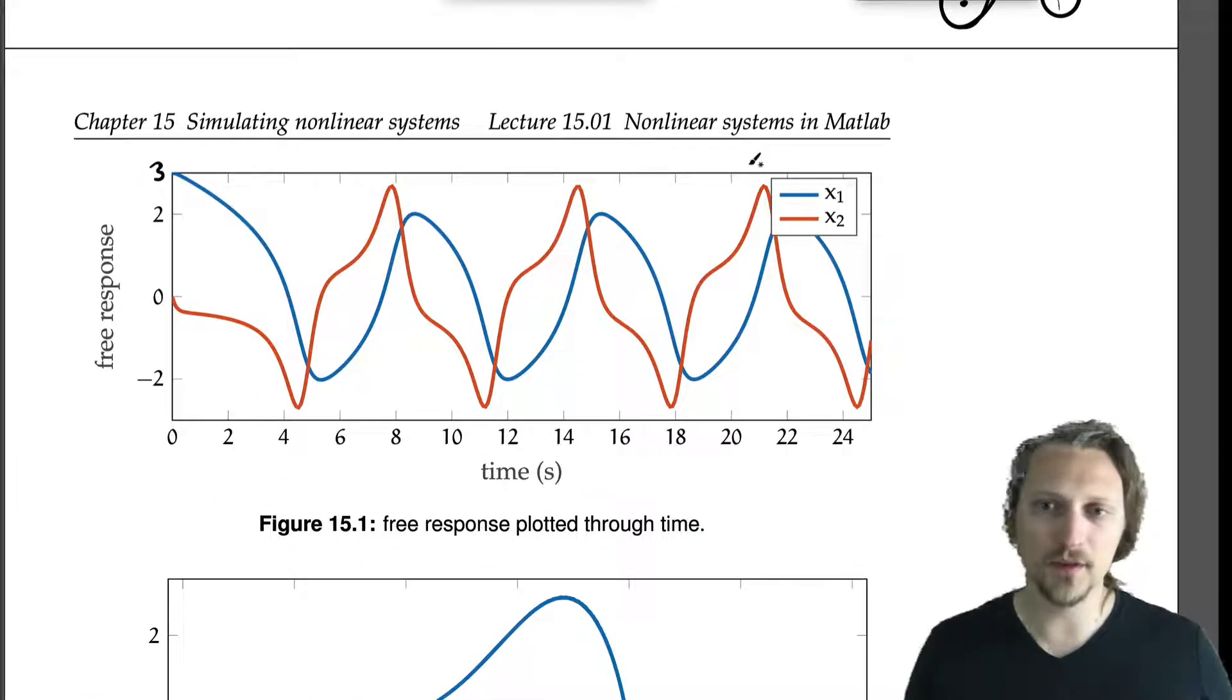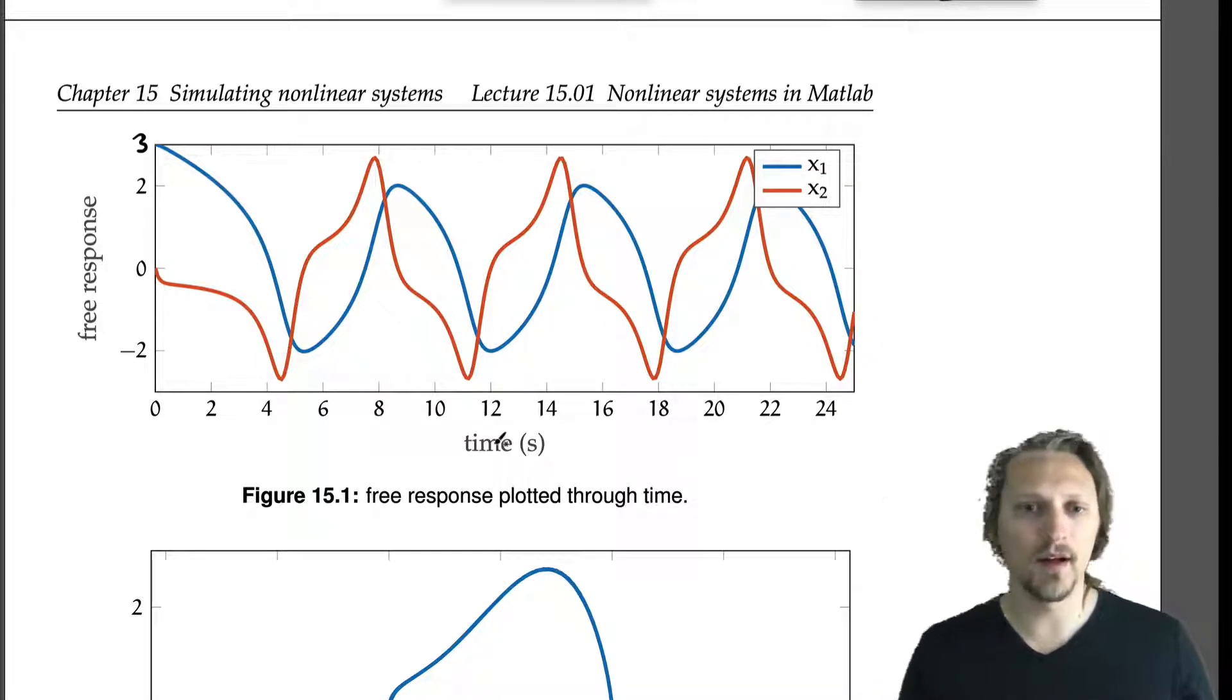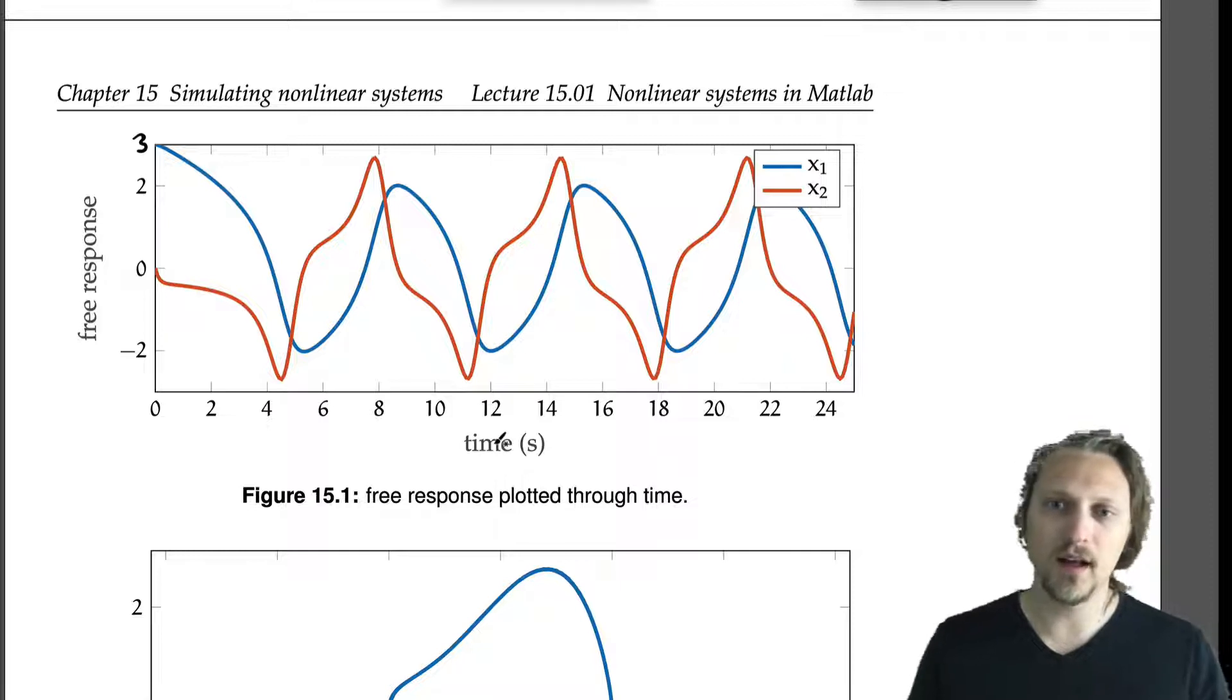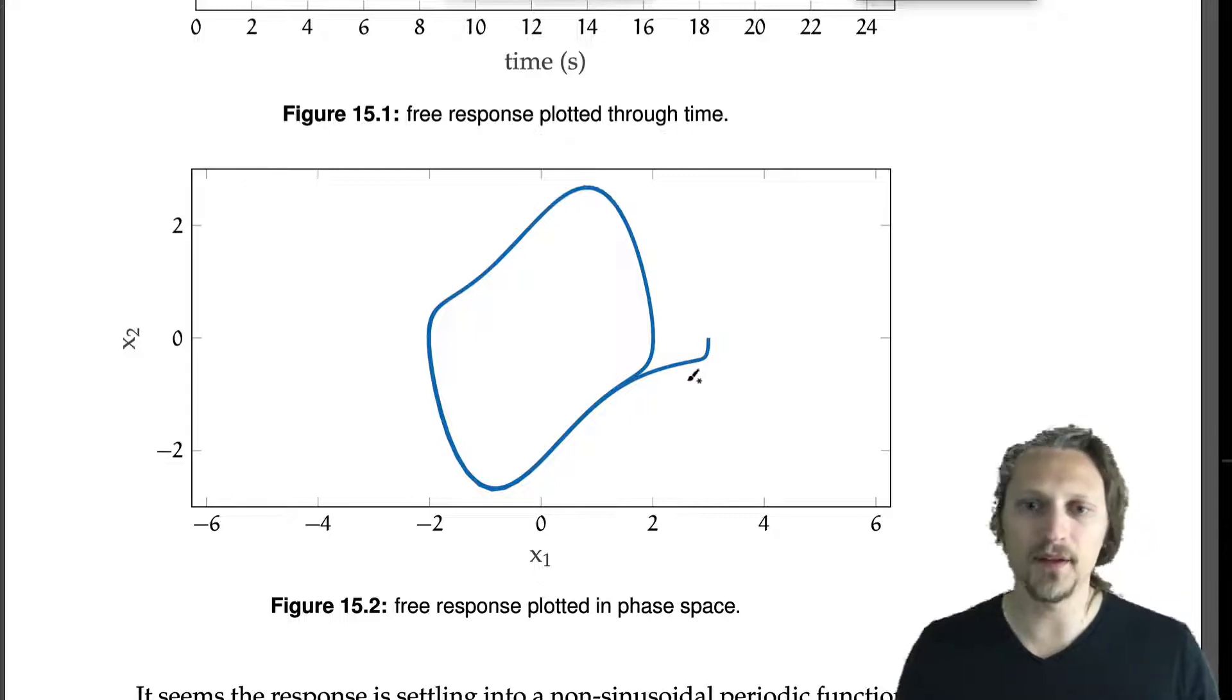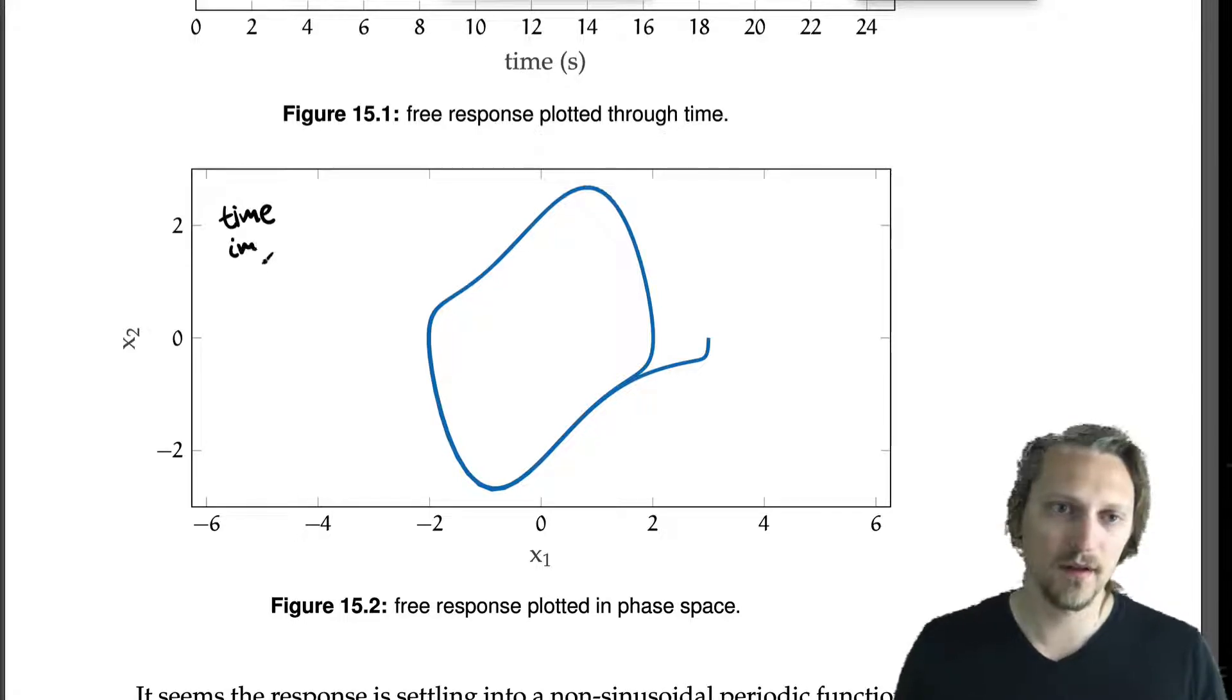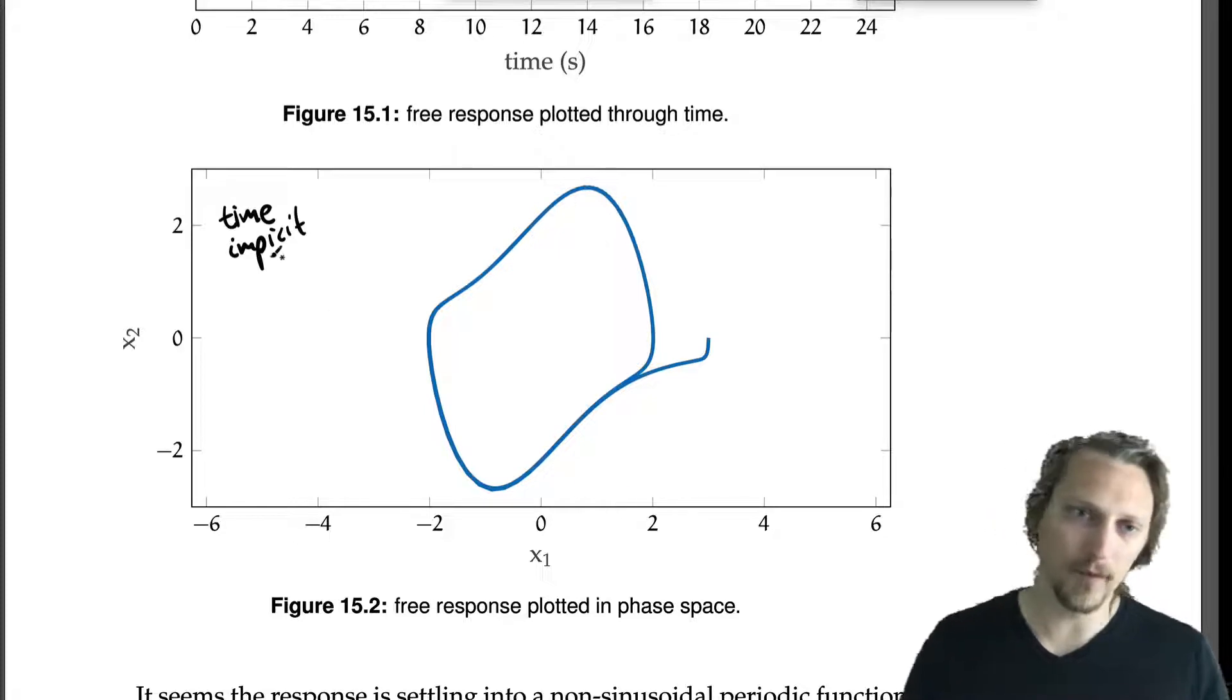So we've got this response, x₁ and x₂, through time. Now this is informative, but another way to look at this is to plot x₁ and x₂ versus each other. So if we plot x₁ and then x₂, we have time implicit here. This is, of course, the phase space representation of a response.